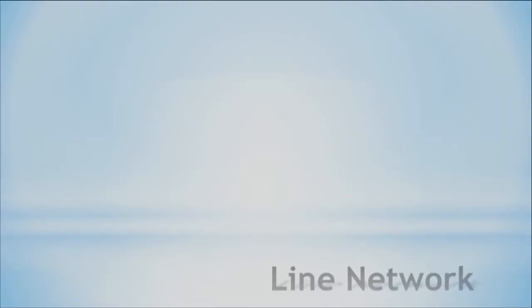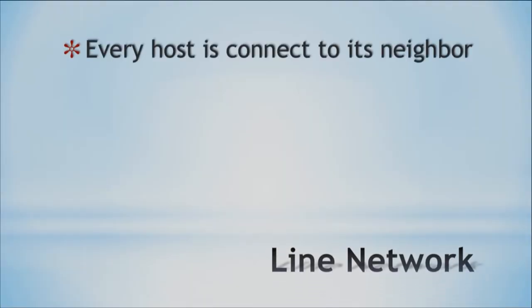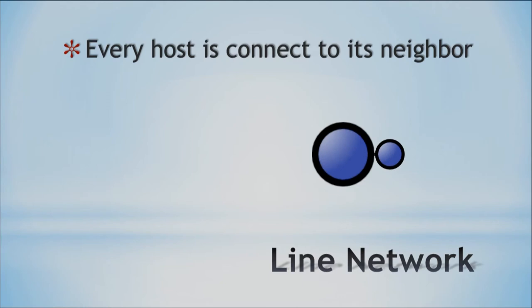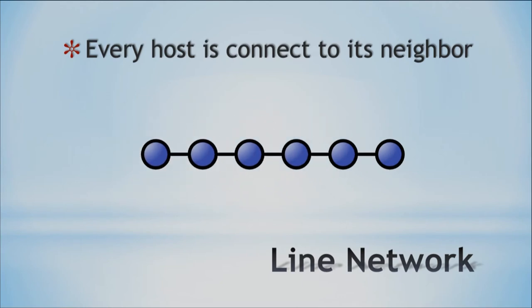Finally, let's look at our last topology — the line network. Every host is connected to its neighbor, so it's just a straight line where every device is connected to its neighbor. With this one, if one link goes down, you're going to lose all connectivity from that point. It doesn't have a lot of redundancy because if one link goes down, everything goes down beyond that link.